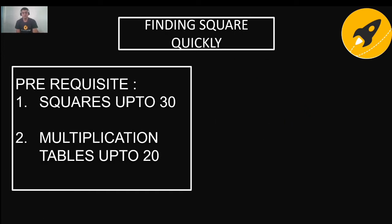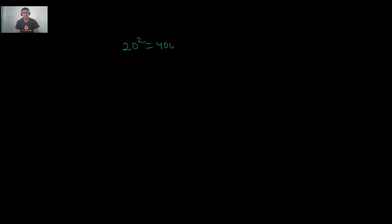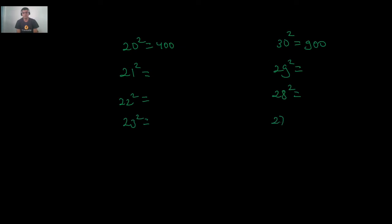20² = 400 and 30² = 900. The squares of numbers between 20 and 30 share a pattern: their last two digits are the same for symmetric pairs. Writing them out: 21², 22², 23², 24², 26², and 25² = 625. You get 625 by multiplying 2 × 3 (the next consecutive number) = 6, then appending 25.